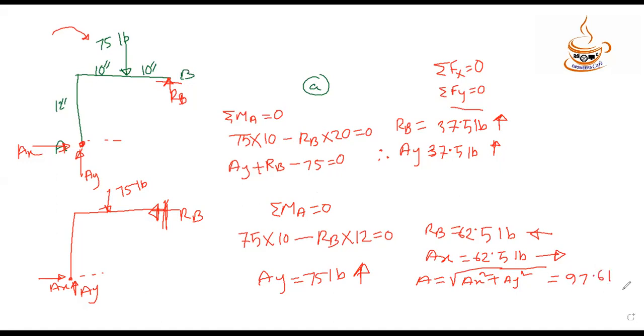To find the angle of the line of action, theta equals inverse tangent of Ay divided by Ax, which gives 50.2 degrees. For alpha equals 90 degrees, B equals zero. Now solving for alpha equals 30 degrees.